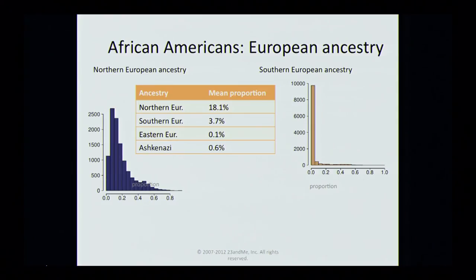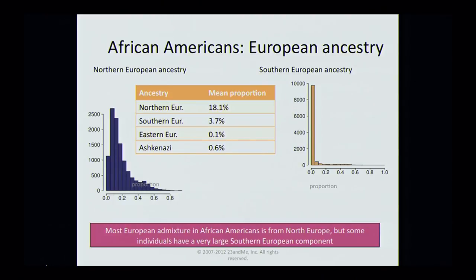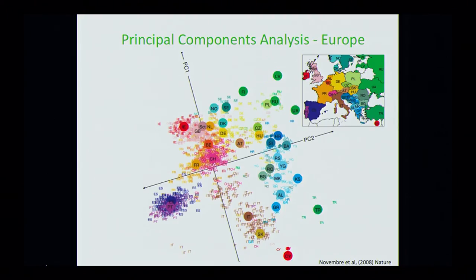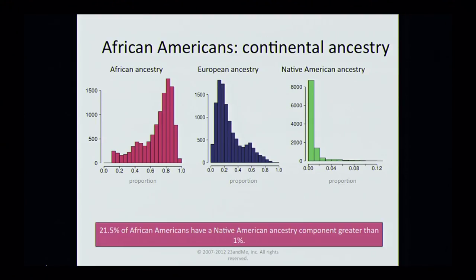European ancestry of African Americans mostly traces to Northern Europe, a little to Southern Europe, some to Eastern Europe, and some African Americans show a small amount of Ashkenazi ancestry. We'll stop there and let the next speaker get started. Thank you.